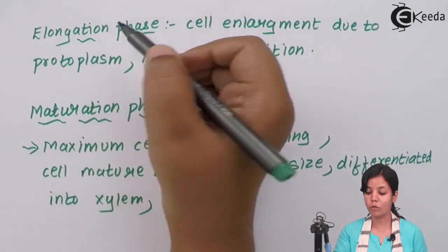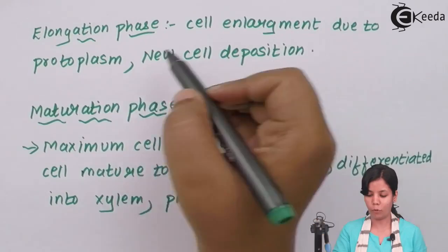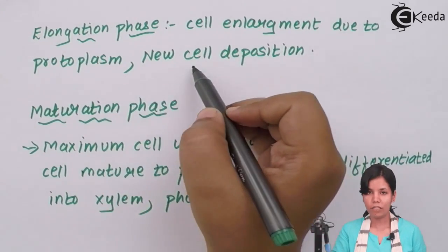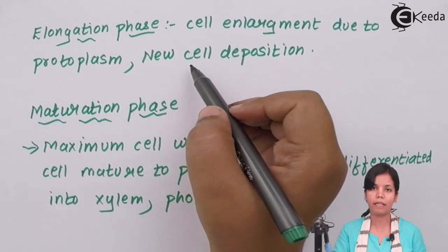The next one is elongation phase. During elongation phase there is cell enlargement due to protoplasm and new cell depositions are found. Basically the cell is completely grown and new cell depositions like Golgi apparatus, ER, ribosomes are found.